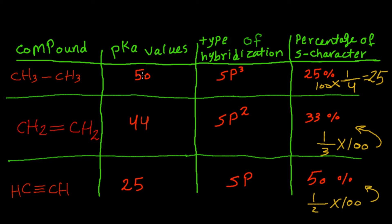When we compare the pKa values for these three compounds we find out that the acetylene here is the most acidic and the ethane compound here is the least acidic because the lower the pKa, the more acidic the compound.